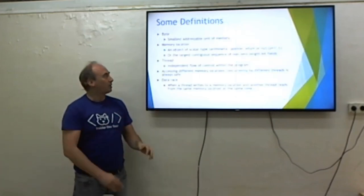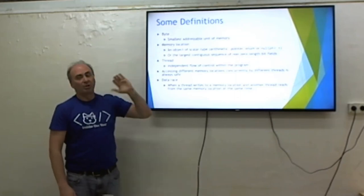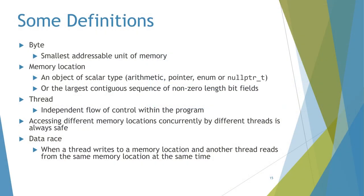Some basic definitions: a byte is the smallest addressable unit. A memory location is where objects are stored — everything has a distinct memory location except bit fields that don't cross a byte boundary. An independent control flow is called a thread. A data race occurs when multiple threads access the same memory location and at least one of them is a writer.